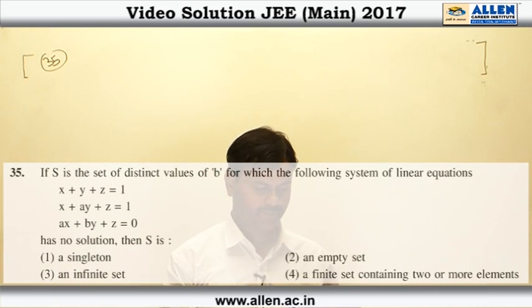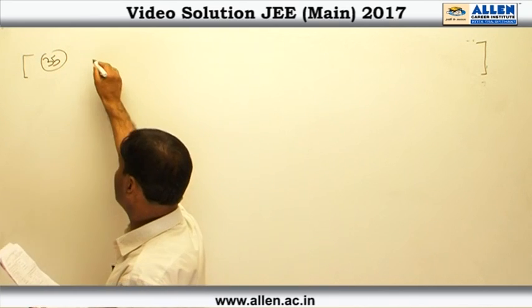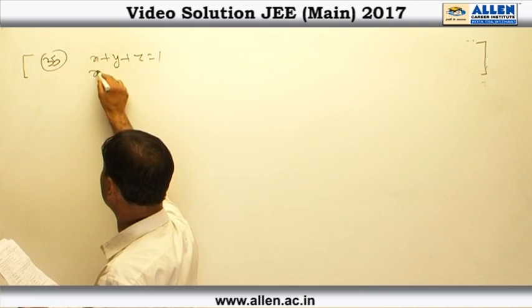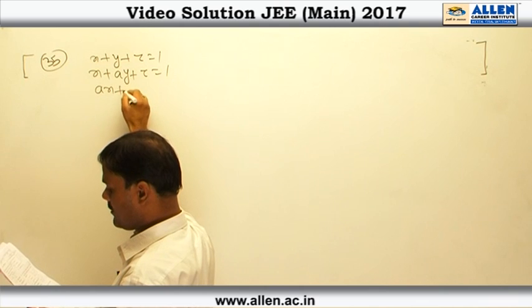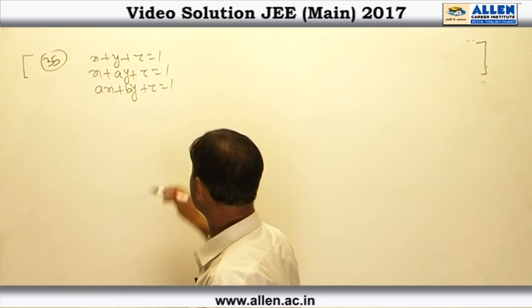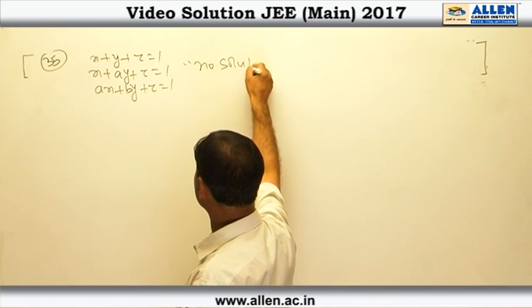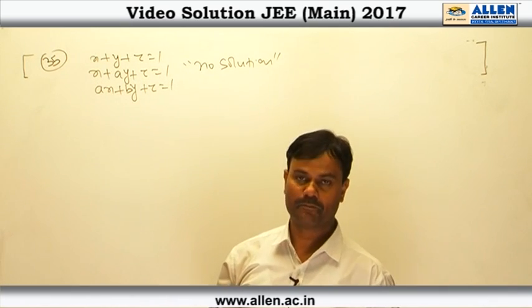Question number 35. We have to find distinct values of B for which the system of linear equations x plus y plus z equal 1, x plus ay plus z equal 1, ax plus by plus z equal 1 will have no solution. System will have no solution means all three planes will not have any common point.